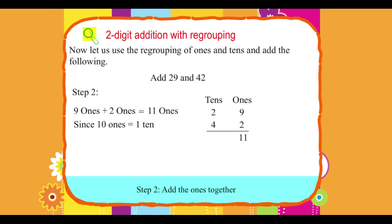Since ten ones equals one ten, therefore, eleven ones equals one ten plus one one. So, carry over one ten to tens column.